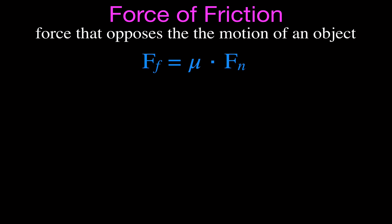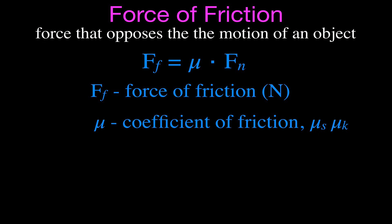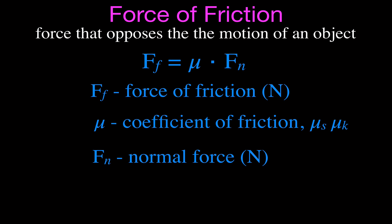Here's how we calculate the force of friction. The force of friction is equal to mu — the coefficient of friction — times the normal force Fn. Note that Fn is the normal force, not the net force. The friction force Ff is measured in newtons. The coefficient of friction has no units. Remember there are two coefficients: one for static (before the object starts moving) and one for kinetic (while the object is moving). Using the static coefficient gives the static friction force; using the kinetic coefficient gives the kinetic friction force — but it's always times the normal force.